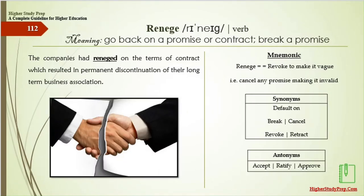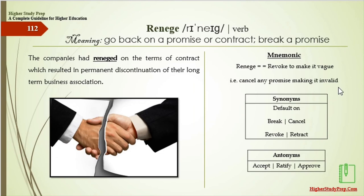Renege means to go back on a promise or contract, or to break a promise. The companies had reneged on the terms of the contract, which resulted in permanent discontinuation of their long-term business association. Mnemonic: renege — to revoke, to make a promise vague or invalid. The synonyms are default on, break, cancel, revoke, or retract. The antonyms of renege are accept, ratify, or approve.